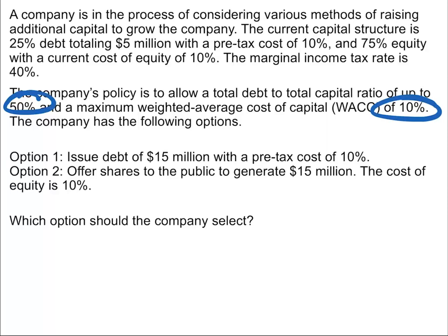If we look at the weighted average cost of capital, it can't be more than 10%. Right now we have debt with a pre-tax cost of 10%, and the after-tax cost of debt will be less than 10%. Our current cost of equity is 10%. Both options have a 10% pre-tax cost for debt and 10% for equity, so there's no chance the WACC would go over 10% with either option. The current WACC is already less than 10% because the after-tax cost of debt is less than 10%, and the new debt would also be less than 10%.